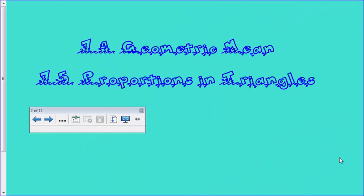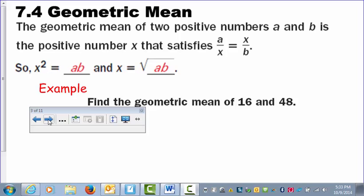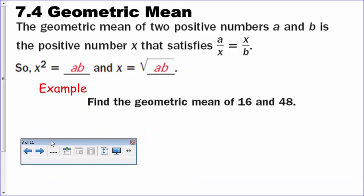Alright, so today we're going to talk about sections 7.4 and 7.5, geometric mean and proportions in triangles. Alright, so we're going to start with geometric mean.